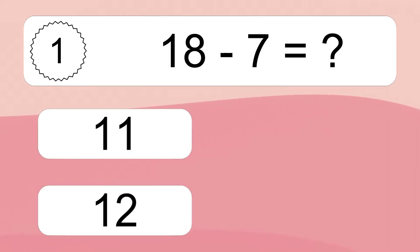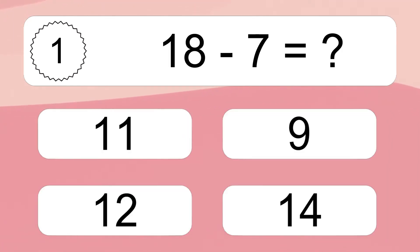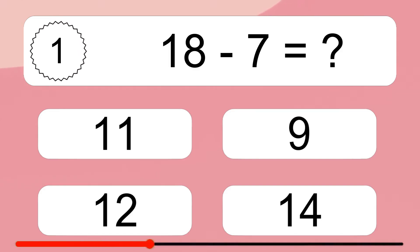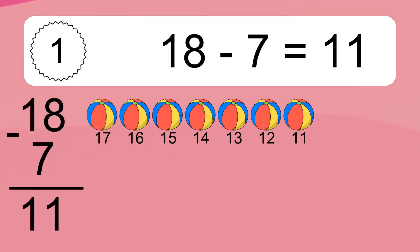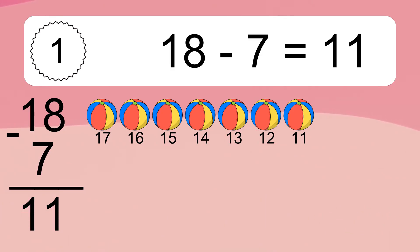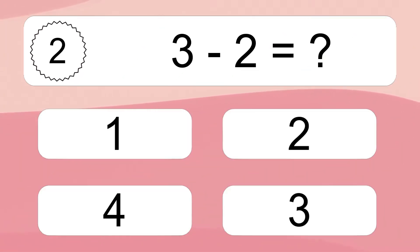18 minus 7 equals what? 18 minus 7 equals 11. Let's count it: 17, 16, 15, 14, 13, 12, 11.